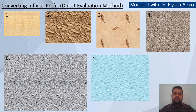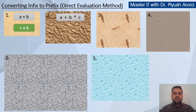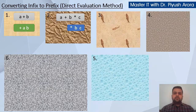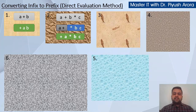Let us see the direct evaluation method, that is the shortcut method. First, simple example — suppose you are given a plus b, so shift the operator to the left side. So it becomes plus a b. Very simple. Second expression: a plus b multiplication c — first by precedence we do b multiplication c, so it becomes multiplication b c, and a plus is written as it is. Now a plus, suppose this is x, so it becomes plus a x, where x is multiplication b c.